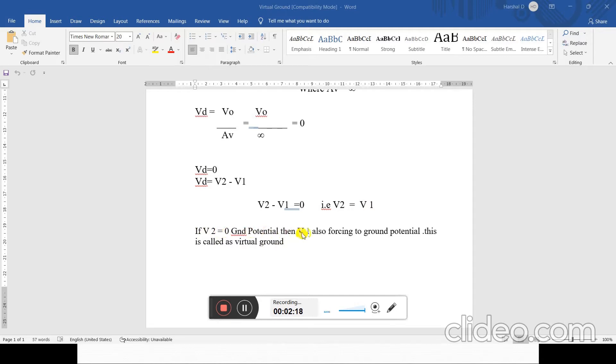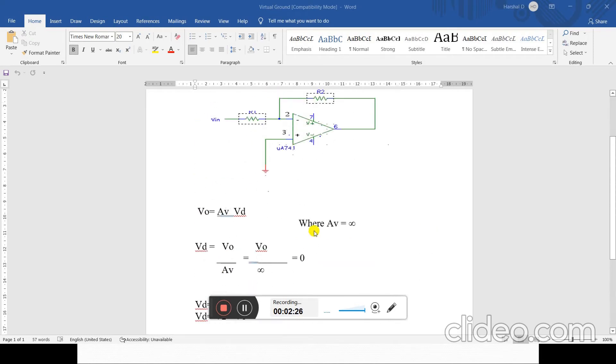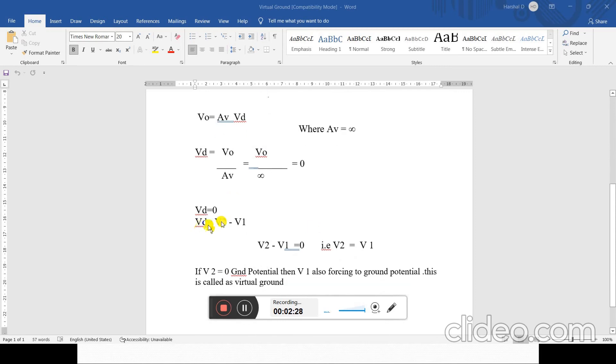If v2 is equal to ground potential, then v1 is also forcing to the ground potential. This is the virtual ground concept. V1 equals zero is the virtual ground concept. Thank you so much.